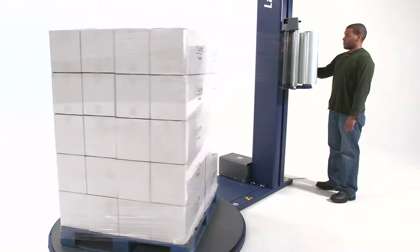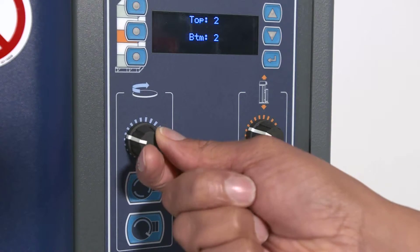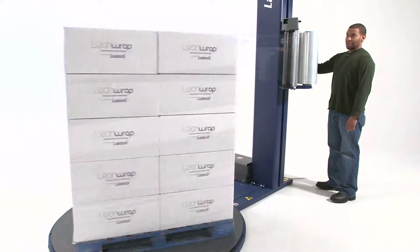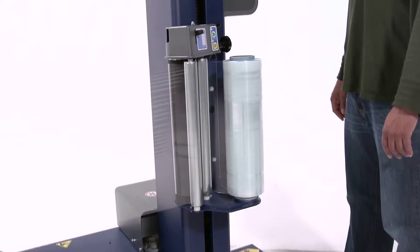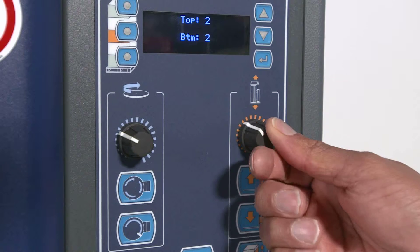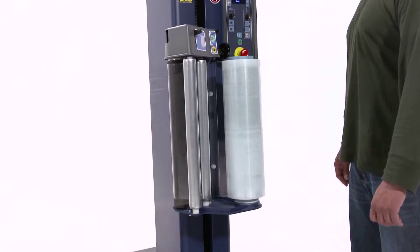To adjust the turntable speed, simply turn the knob clockwise or counterclockwise. The film delivery system speed can be adjusted in the same way. Changing the top and bottom wrap counts is easy.